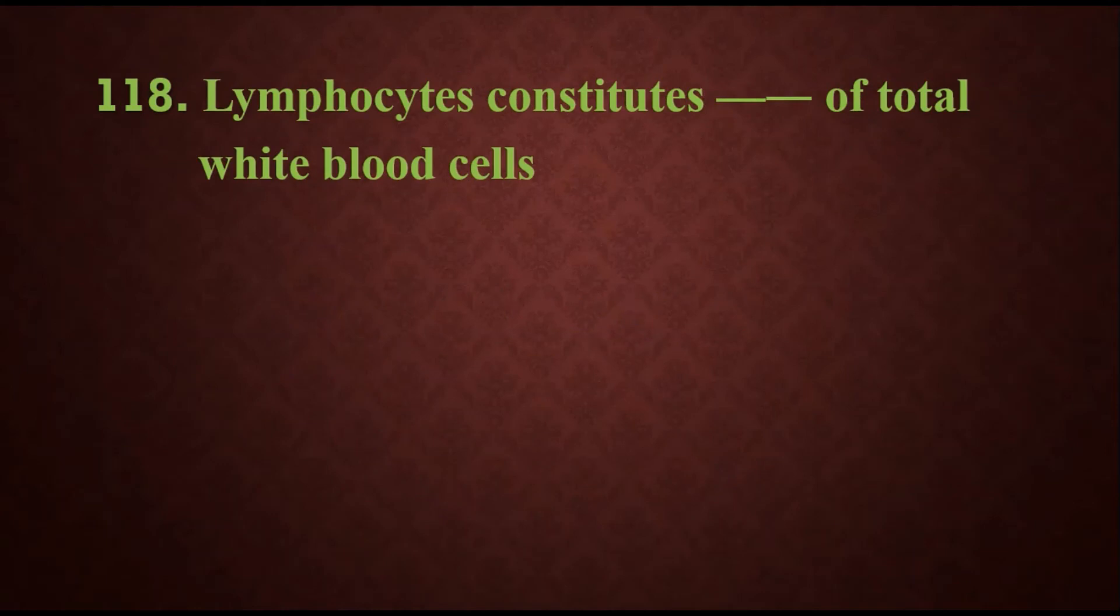Question 118: Lymphocytes constitute what percentage of total white blood cells? Options are 60 to 70 percent, 20 to 40 percent, 10 to 15 percent, or 90 to 95 percent. Option B is the right answer, 20 to 40 percent.